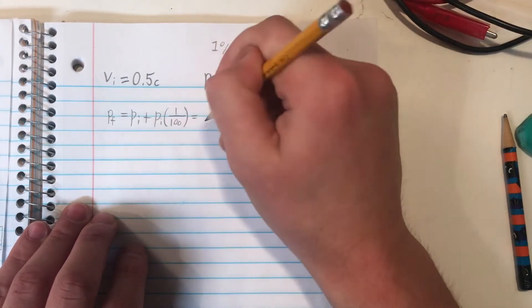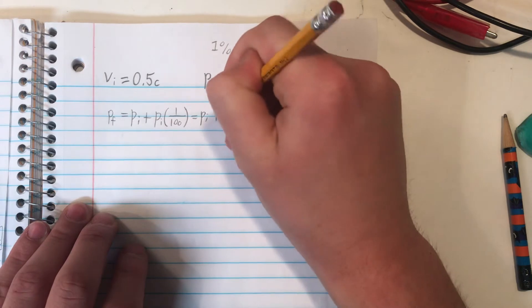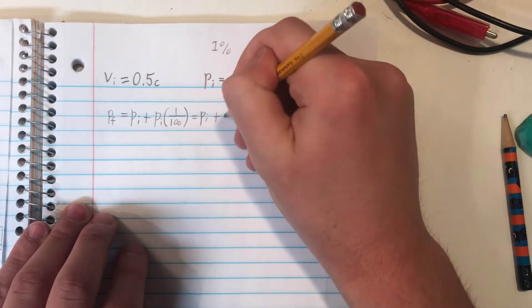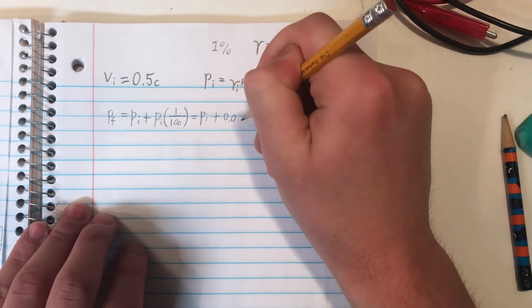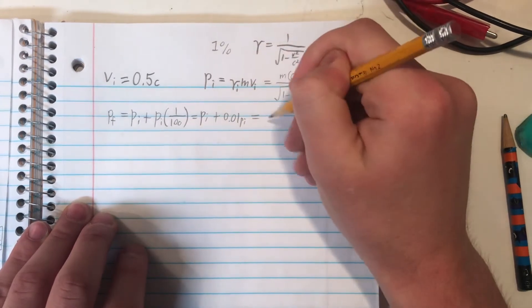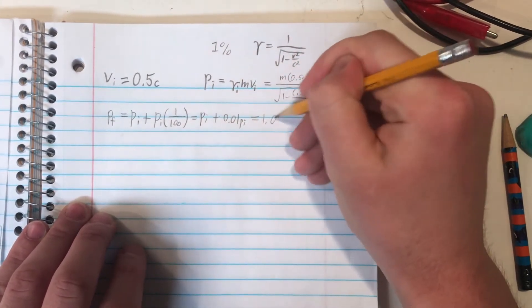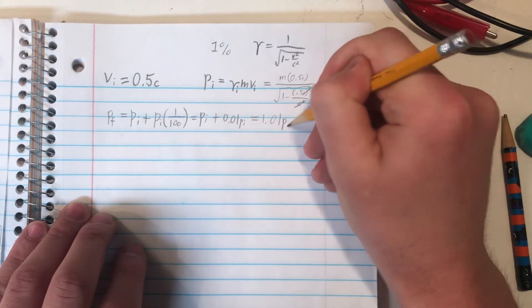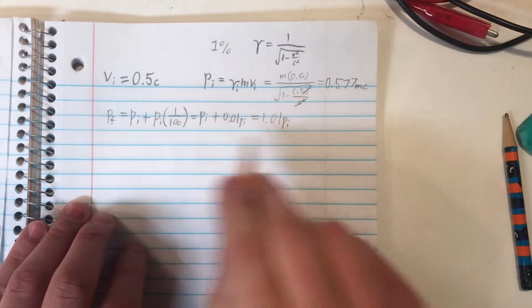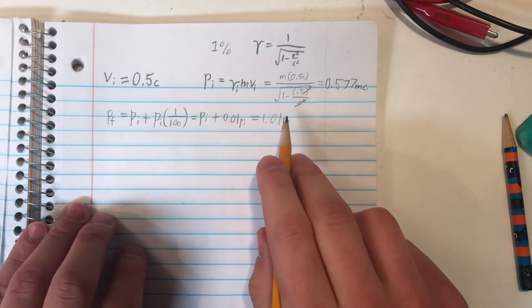But either way, in our case, that is p sub i plus 0.01 times pi, or just shorten it down to 1.01 times pi. And our final momentum should be equal to 1.01 times the initial momentum.